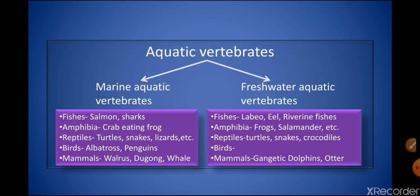Next, we come to aquatic vertebrates. Water bodies are of two types — marine and freshwater — and accordingly aquatic vertebrates are also divided. Under marine aquatic vertebrates come the five groups: fish, amphibia, reptiles, birds, and mammals. Similarly, freshwater aquatic vertebrates also include fishes, amphibians, reptiles, birds, and mammals.